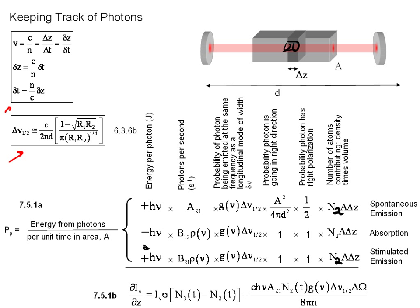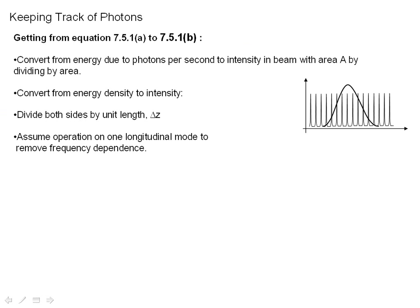You end up with an equation that looks like this. So how do we get to this equation, 7.5.1b, which is critically important for understanding how a laser works? To get from 7.5.1a to 7.5.1b, we convert the energy from photons per second to intensity of the beam with area A by dividing by area. Essentially, we convert from a power to an intensity by dividing by A. So just divide the whole thing by A.